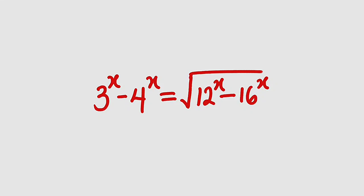Hello, good day viewers. In this tutorial, we are going to find a solution to this interesting equation: 3 to the power of x minus 4 to the power of x equals the square root of 12 to the power of x minus 16 to the power of x. Let's get started.